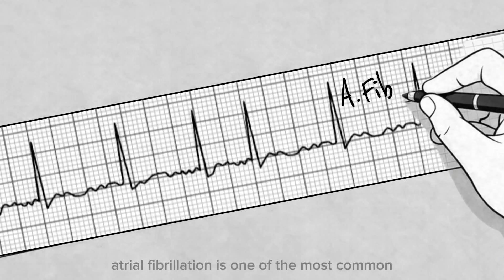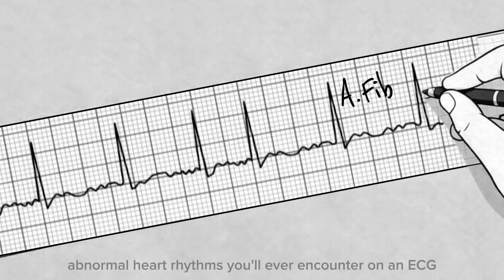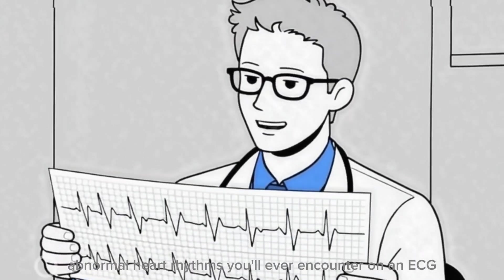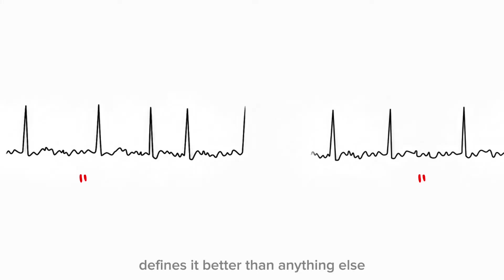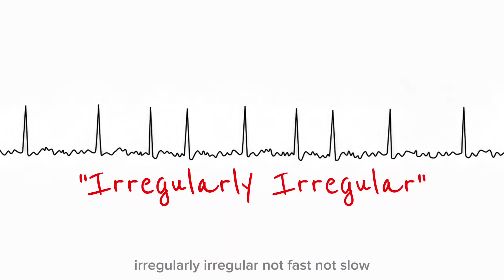Atrial fibrillation is one of the most common and most important abnormal heart rhythms you'll ever encounter on an ECG. And there's one phrase that defines it better than anything else: irregularly irregular. Not fast, not slow, not just uneven, but completely unpredictable.